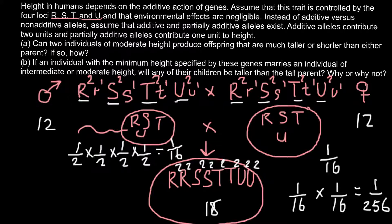This explains how two parents of moderate height may have a child who is going to be much taller than either of them. The same rule applies to the variant where we get only small alleles in both sperm and egg cell, producing a very short child. Of course, there would be many intermediate variants as well, so this couple has equal chances to have a very tall child, a very short child, or many intermediate genotypes.